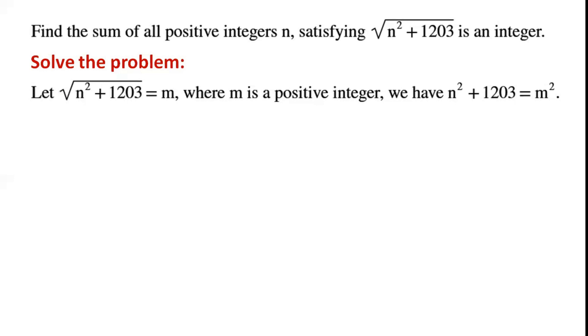We have n² + 1203 = m². By rearranging the equation, m² - n² = 1203.